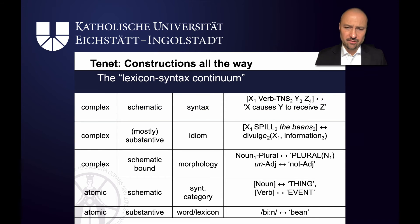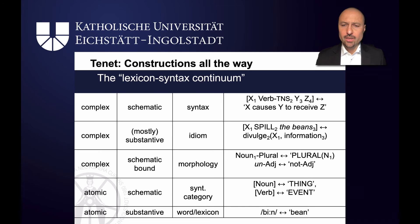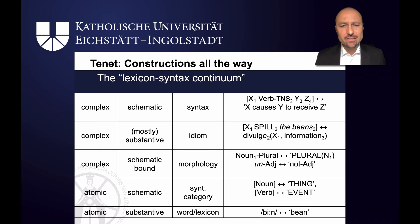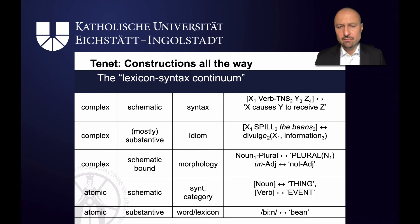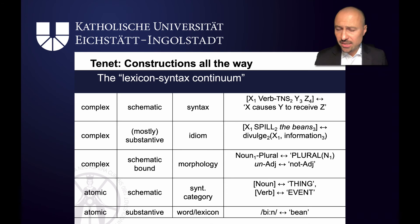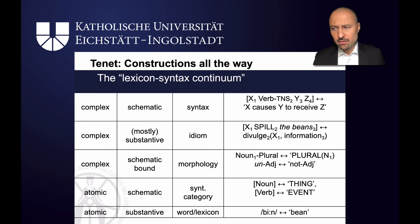Finally, we've got complex schematic constructions — for example, argument structure constructions like the resultative, or the ditransitive construction, which has three slots: 'she gave him the books', 'he sent her the letter', 'Bill threw him the ball'. In all of these, the subject causes the object to receive the second object. 'Bill gave her a book' means Bill causes her to receive a book. All slots — x, verb, y, and z — can be freely filled by noun phrases. The x slot is the agent, the y slot is the recipient, and the z slot encodes the theme — the thing being passed along or given.